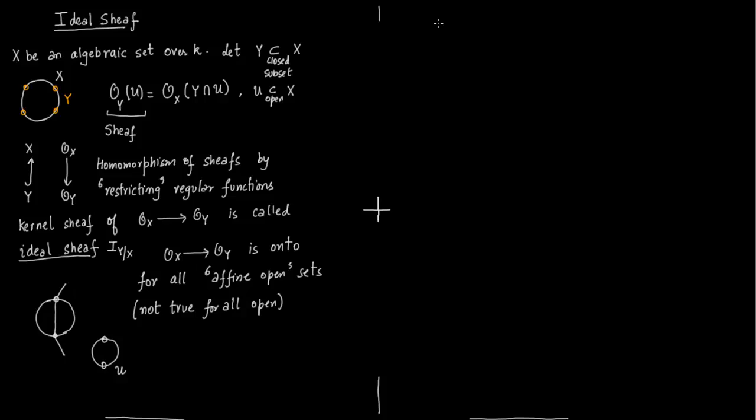So now we come to a very important short exact sequence on an algebraic set X. You have Y as a closed set of X and then you have the ideal sheaf. You have this short exact sequence.